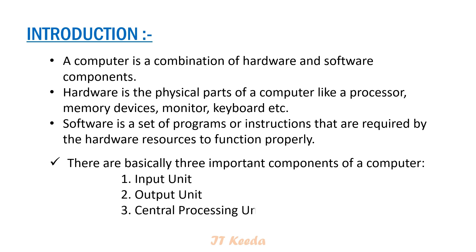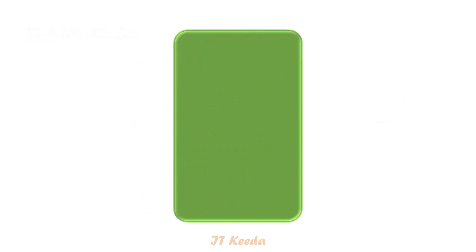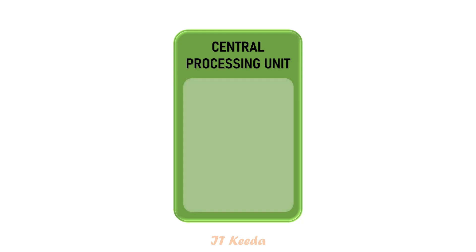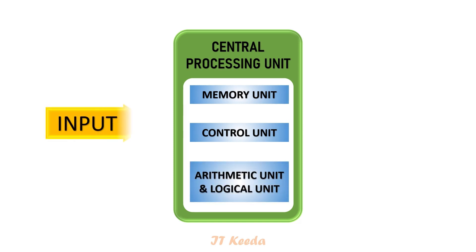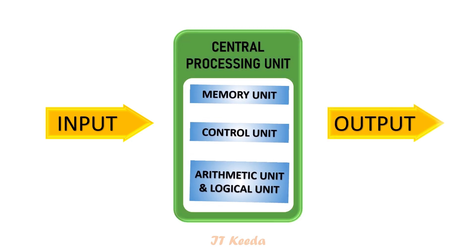Output unit, 3. Central processing unit. Now look at the diagram. When we input any data to the system, it goes through the CPU, where the data is processed, and then the CPU displays the processed data as output.